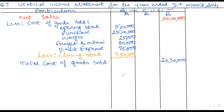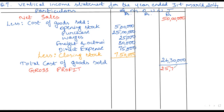From sales, we are deducting COGS. So what will we get? We will get gross profit. Net sales minus COGS gives gross profit. The amount of gross profit: 50,00,000 minus 24,30,000 comes to 25,70,000.